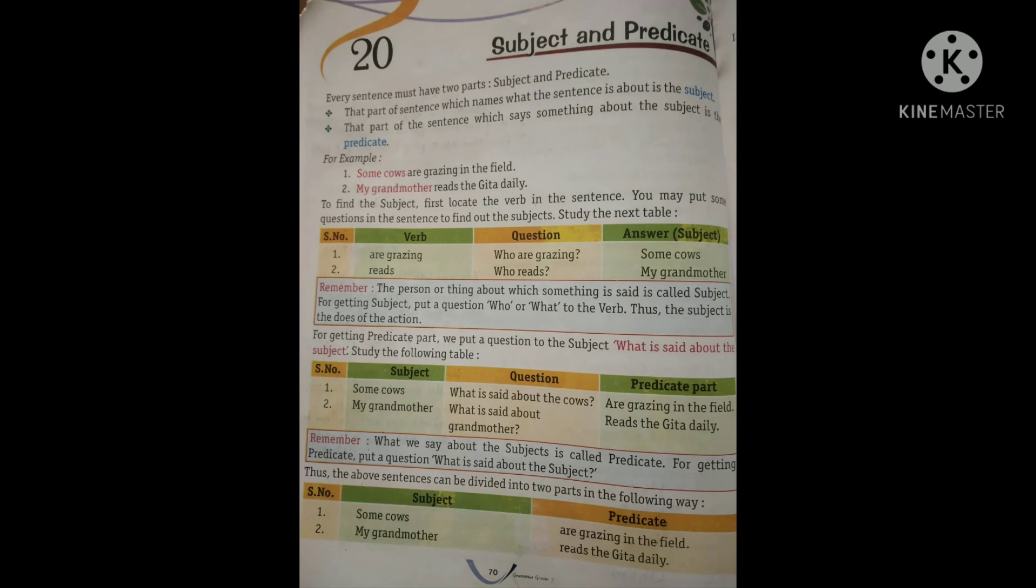So finally, last table mein aapko dikhaya gaya hai ke subject hua some cows, woh hua subject, aur are grazing in the field hua predicate. Same way, my grandmother hua subject, aur reads the Gita daily hua predicate.